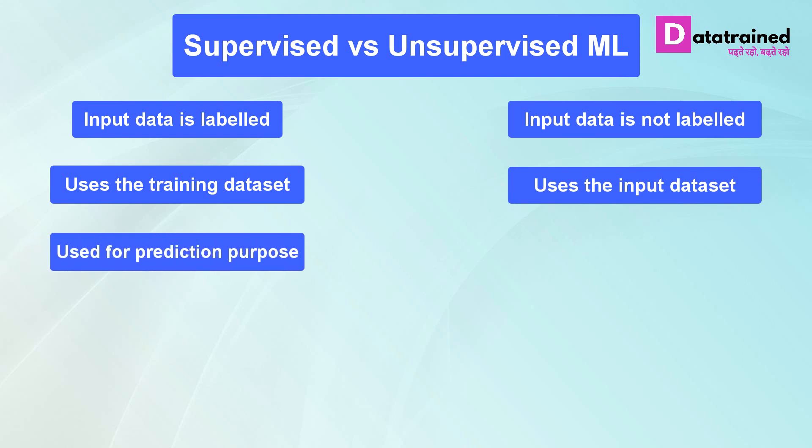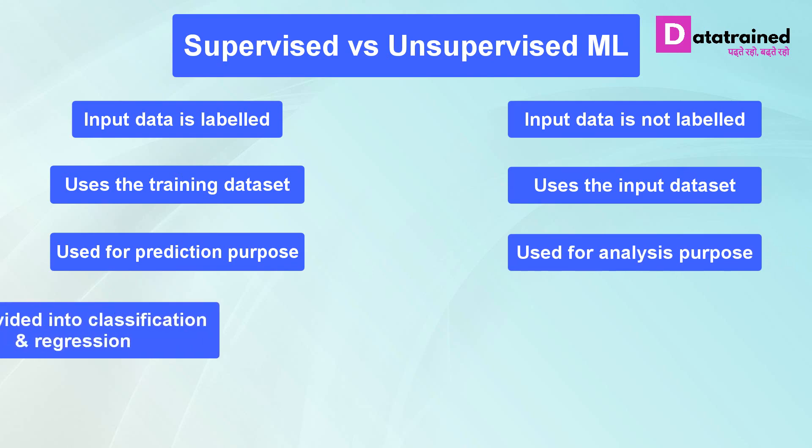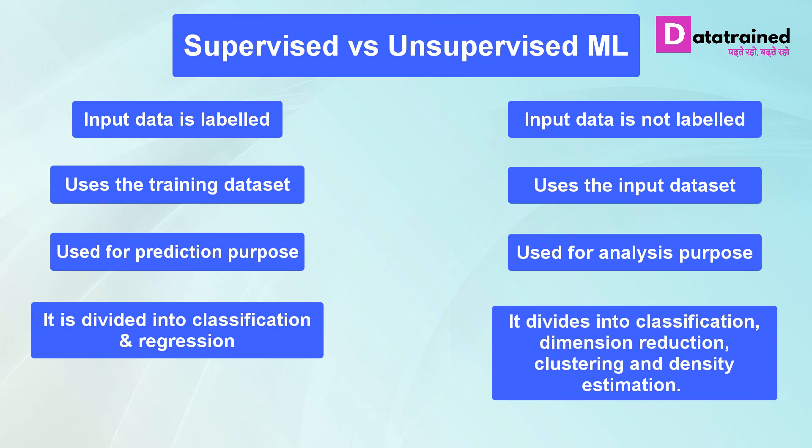Supervised ML is used for prediction purpose. However, unsupervised ML is used for analysis purpose. Supervised ML is divided into classification and regression. However, unsupervised ML is divided into classification, dimension reduction, clustering, and density estimation.